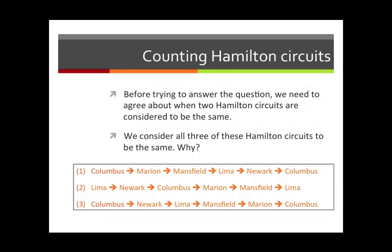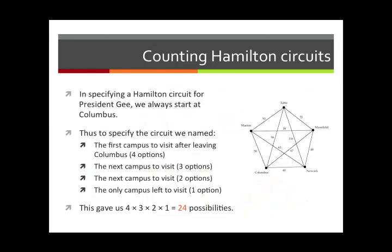With that understood, we can now figure out how many Hamilton circuits there are in a complete graph. We'll do the example of President Gee visiting the Ohio State campuses. The president lives and has his office in Columbus, so he would always think of starting at Columbus. Now, if we want to specify a Hamilton circuit, we know we're going to start at Columbus, so we don't have to make any choices for that. The first thing we need to decide is where do we go from Columbus?